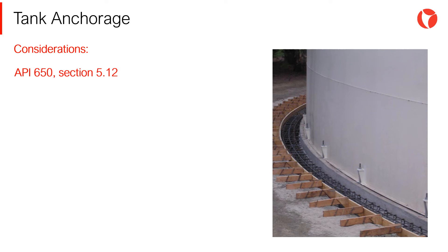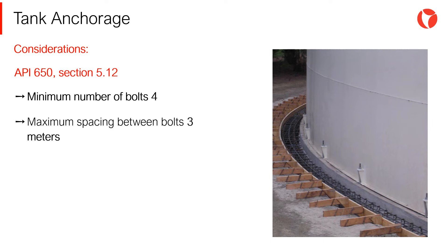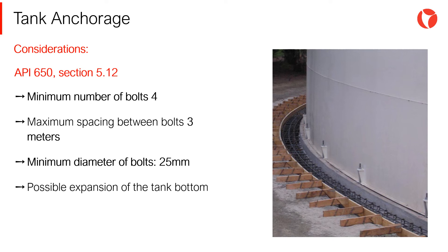Some of the most important requirements when designing anchor bolts are: the minimum number of bolts should be 4, maximum spacing between bolts is 3 meters, the minimum bolt size is 25 millimeters, and anchor bolts must be designed to absorb possible expansion of the tank bottom as a result of high operation temperatures, usually above 93 degrees.